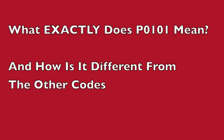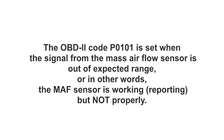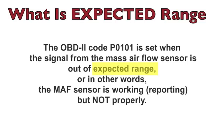Our code is P0101. What exactly does that mean and how does it differ from the other codes? According to the service information, the OBD2 code P0101 is set when the signal for the mass air flow sensor is out of the expected range. In other words, the mass air flow sensor is working and reporting, but not properly. So what is the expected range?